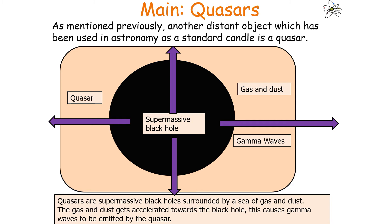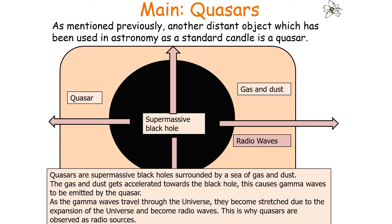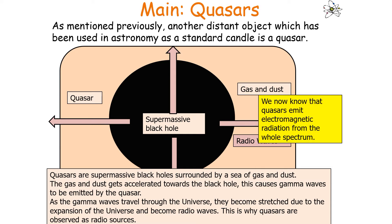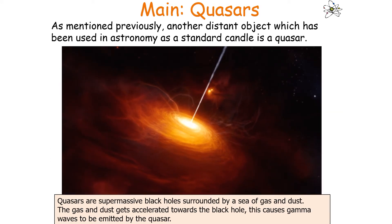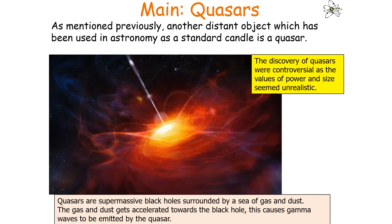As the gas and dust are accelerated towards the supermassive black hole, this causes gamma waves to be emitted by the quasar. As the gamma waves travel through the universe, they become stretched due to the expansion of the universe and become radio waves, which is why quasars are observed as radio sources. We now know that quasars emit electromagnetic radiation from the whole spectrum. You can observe here an artist's impression of what a quasar looks like. The discovery of quasars was controversial as the values of power and size seemed unrealistic compared to other objects in our universe.